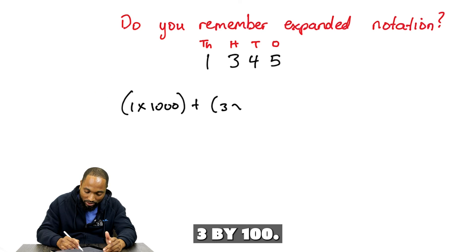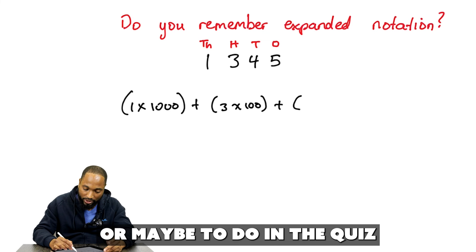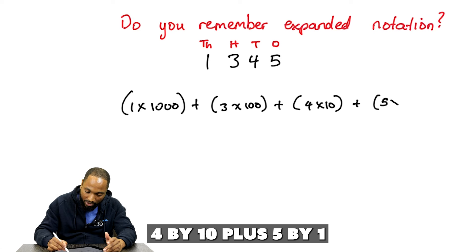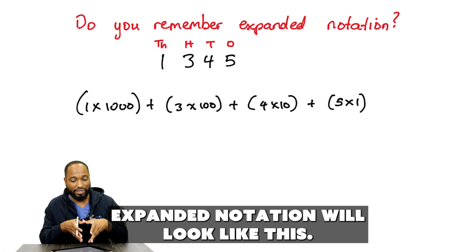It's coming back. Ringing a bell. 3 by 100. Maybe I'll give you all some for homework or maybe to do the quiz to make sure that, you know, we up the speed. 4 by 10 plus 5 by 1. So, 1,345 in expanded notation will look like this.